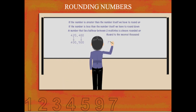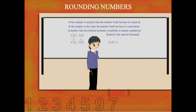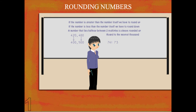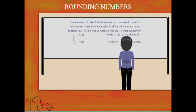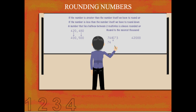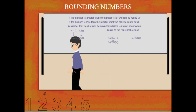If we round off 7,41,673 to the nearest thousand, then 41,673 will become 42,000. The rounded off number will be 7,42,000. Easy!